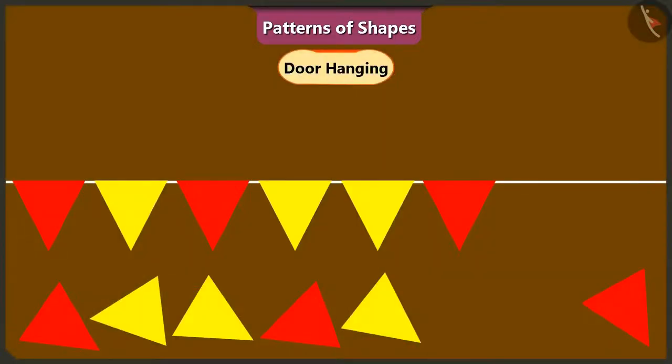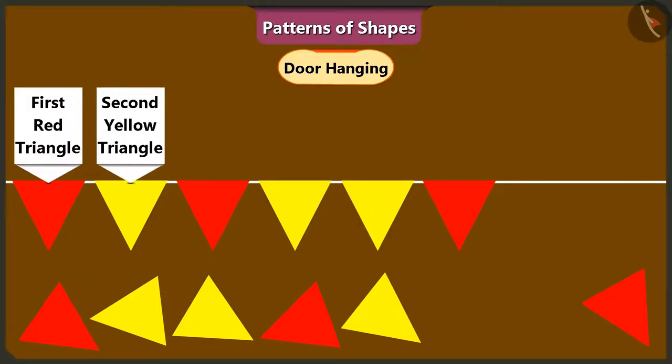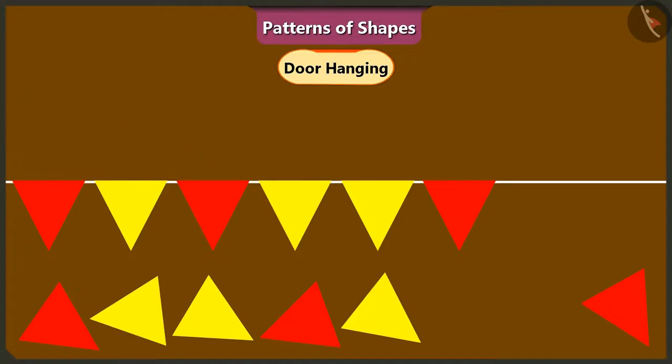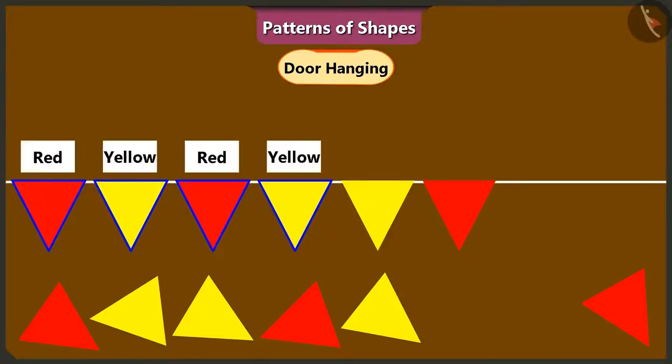Yes, ma'am. In this toran, first triangle is red and the second triangle is yellow in color. Yes, the third triangle is red in color and the fourth triangle is yellow in color. Both of you are correct. Children, all the shapes in this toran are triangles. Keep in mind the colors of the triangles and repeat the color pattern while making this door hanging or toran.